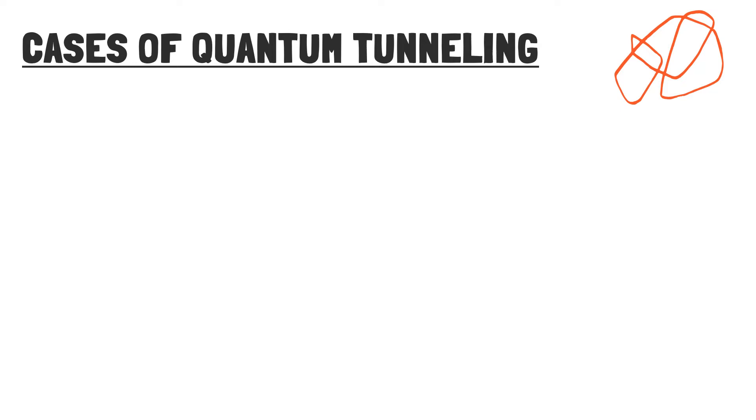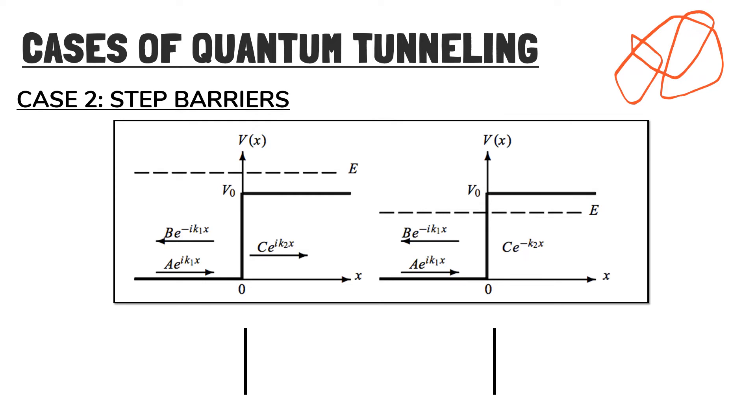while the other case is where the energy is less than the barrier's potential. In both of these cases, the energy in region 1 is 0, when x is equal to 0, and the solution of the Schrodinger equation is as follows.